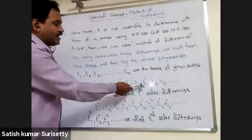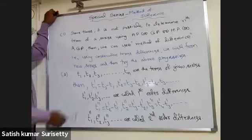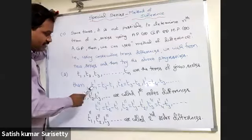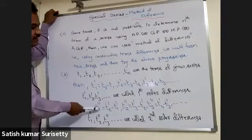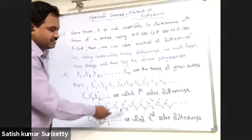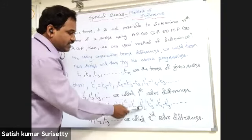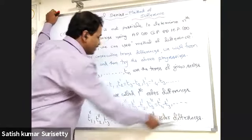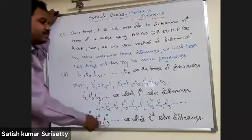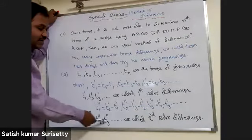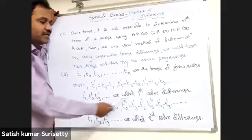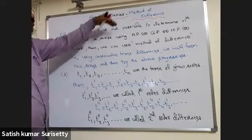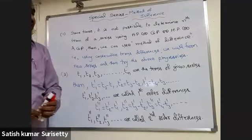If the first-order differences do not follow any AP, GP, HP, or AGP, we go further and take differences of consecutive first-order terms. We define t1'' = t2' − t1', t2'' = t3' − t2', and so on. These are called second-order differences. If second-order differences also don't follow any progression, we take third-order differences, then fourth-order, and continue until we find some progression.